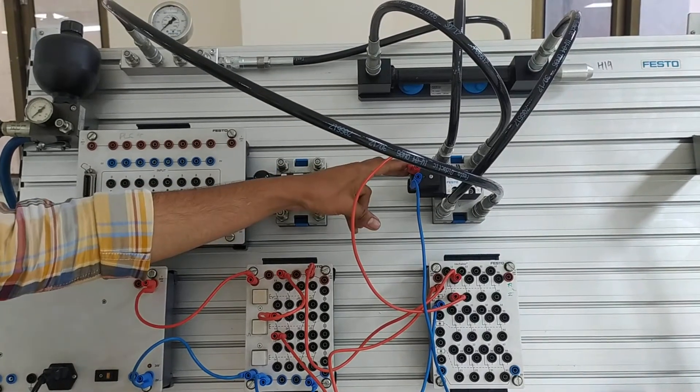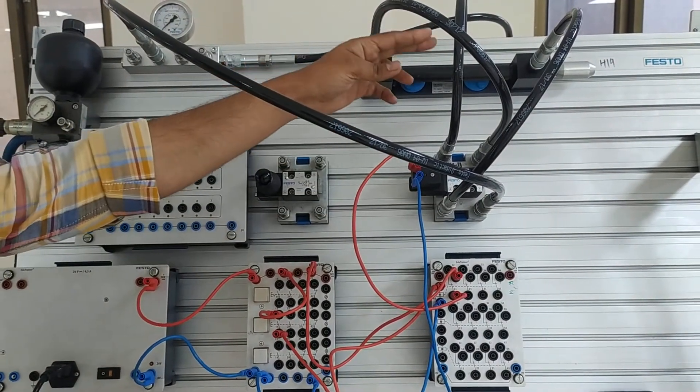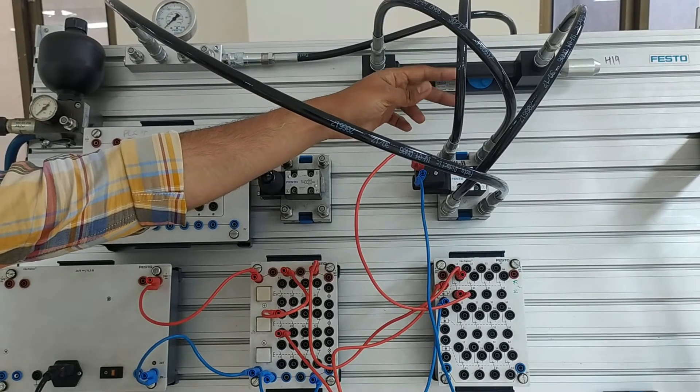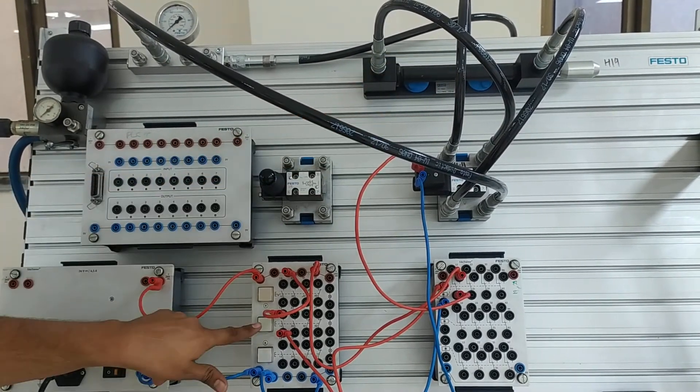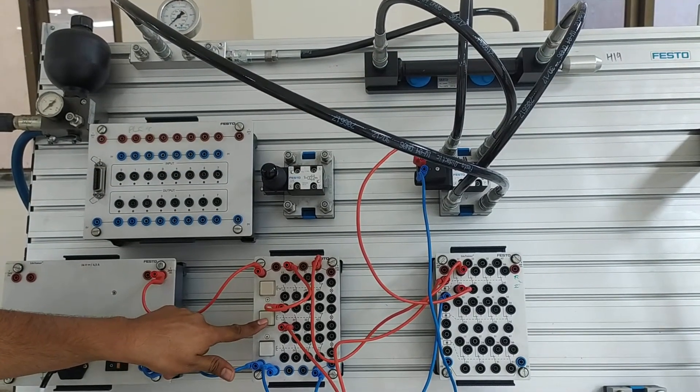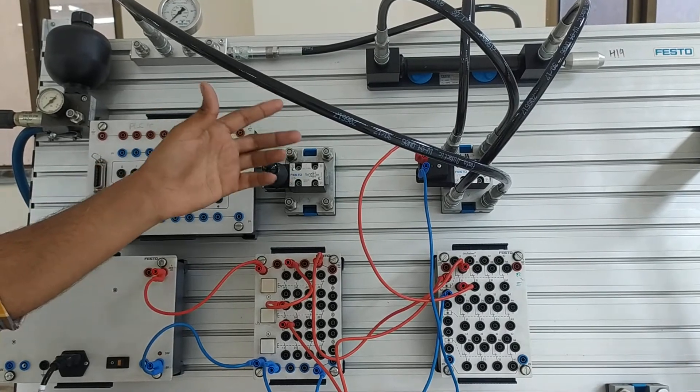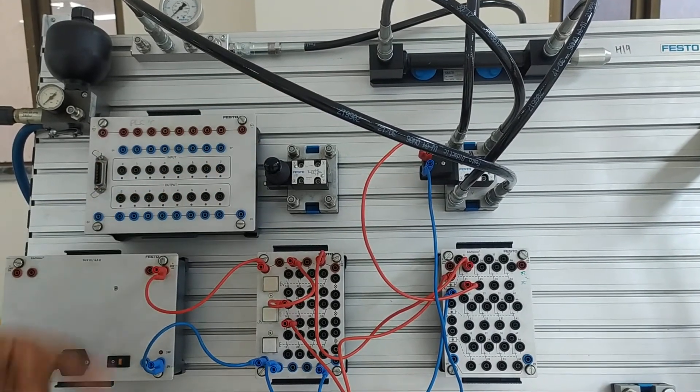The solenoid valve is also energized and it helps to start the movement of the piston in forward direction. When the push button is released, the piston moves to its original position. Let's start the experiment.